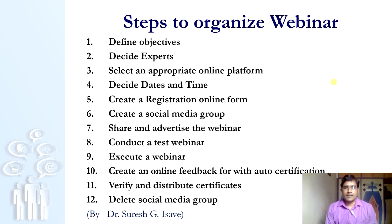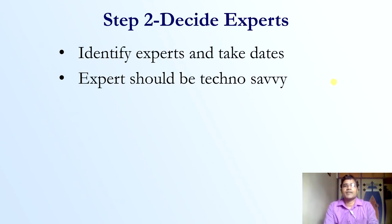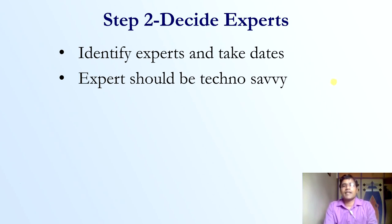These are tentative 12 steps — you can vary or change them. Now I will explain them one by one. Step 1: When you want to organize a webinar, set an objective for it and decide a theme and sub-themes. Step 2: Find an expert who can speak on those themes, and the expert should also be techno-savvy. Some experienced experts are excellent in content but are not able to handle the technology, which causes hurdles. So find experts who are strong in both content and technology.